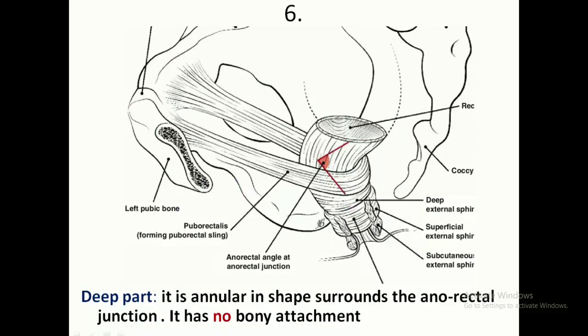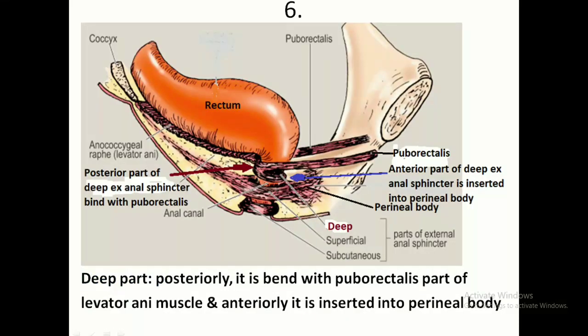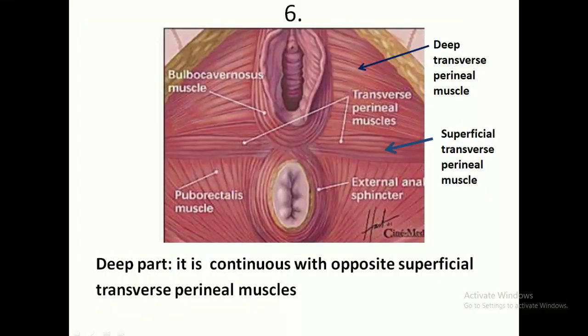The deep part of the anal sphincter is annular in shape around the anorectal junction and has no bony attachment. The posterior part of the deep anal sphincter is attached to the puborectalis muscle, and anteriorly it is inserted into the perineal body. The deep part is also continuous with the opposite superficial transverse perinei muscle.